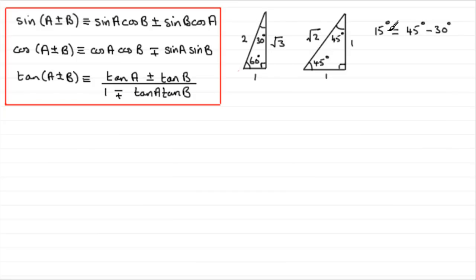So if it was say the sine of 15 degrees that we were looking for, we could use the identity the sine of A minus B, where A would be the 45 degrees and B would be the 30 degrees. I'll show you how this works in a moment with an example.